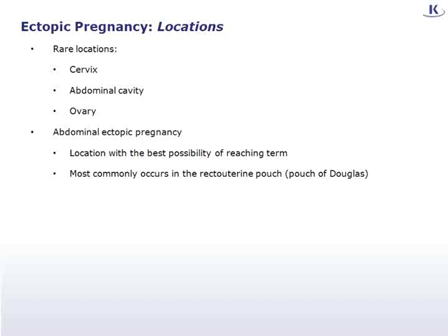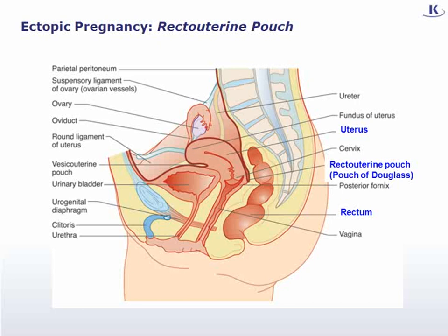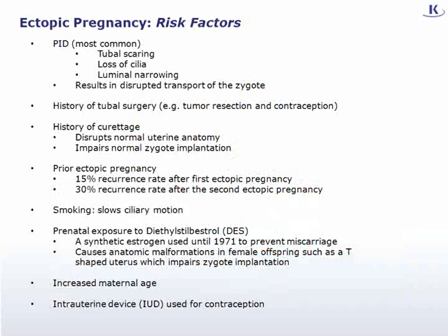Abdominal ectopic pregnancy most commonly occurs in the recto-uterine pouch, also called the pouch of Douglas, which is the space formed between the anterior wall of the rectum and the inferior wall of the uterus. The most common predisposing risk factor for ectopic pregnancy is previous pelvic inflammatory disease. The infection and inflammatory reaction lead to tubal scarring, loss of cilia, and narrowing of the lumen, resulting in problematic transport of the zygote. Similarly, damage from previous tubal surgery — to resect a tumor or as a means of contraception — increases the risk. History of curettage is another risk factor, as it can disrupt normal uterine anatomy and impair implantation.